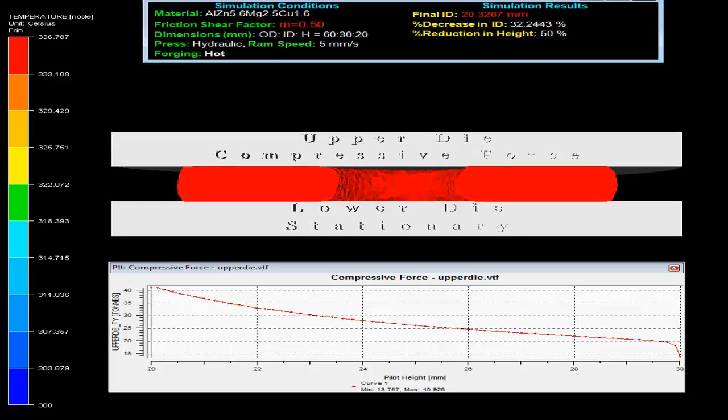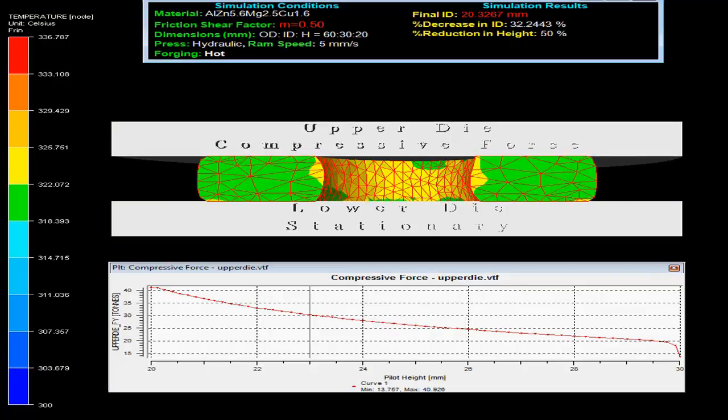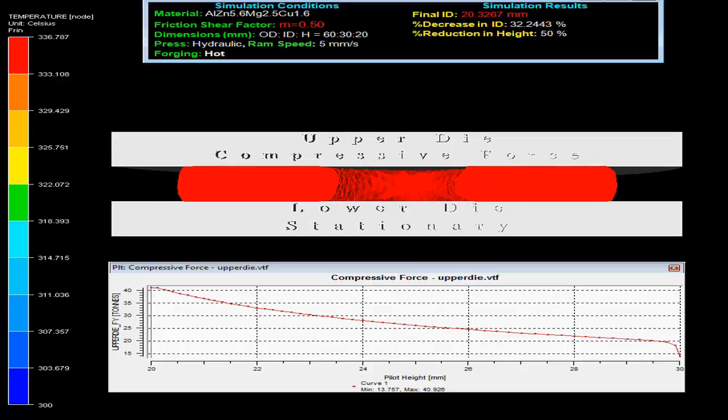The press uses hydraulic press with ram speed 5 mm per sec and forging is done hot.